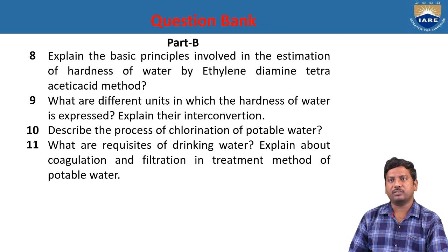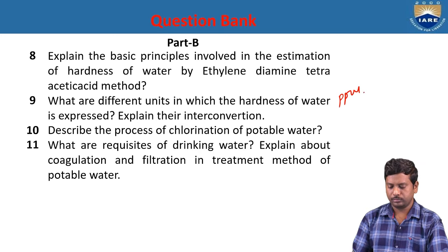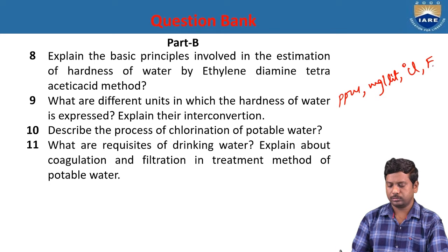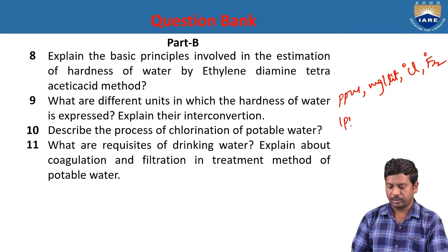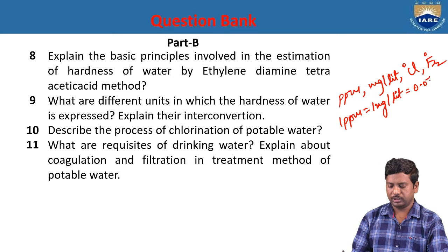What are the different units in which hardness of water is expressed? There are four units: ppm, milligram per liter, Clark degree, and French degree. The interconversion: 1 ppm = 1 mg/L = 0.07 Clark degree = 0.1 French degree.